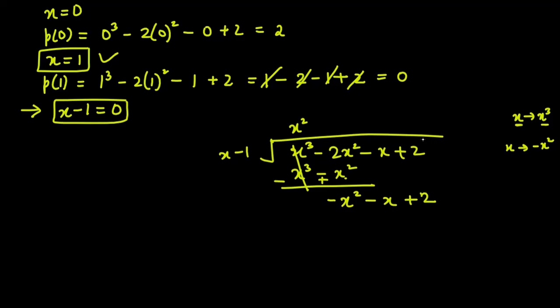Bring down minus x plus 2. Now the first term is x and the current term is minus x square. To make x into minus x square, multiply by minus x. Now multiply minus x by x to get minus x square, and minus x by minus 1 to get plus x. After sign change for subtraction: minus x square cancels. Reading minus x minus x gives minus 2x.